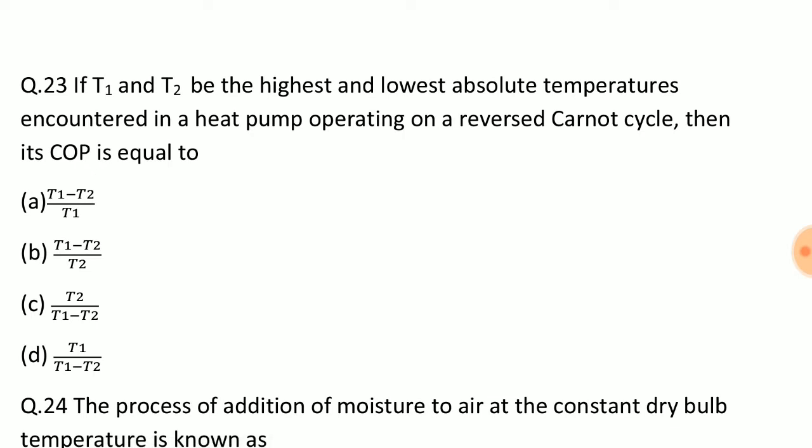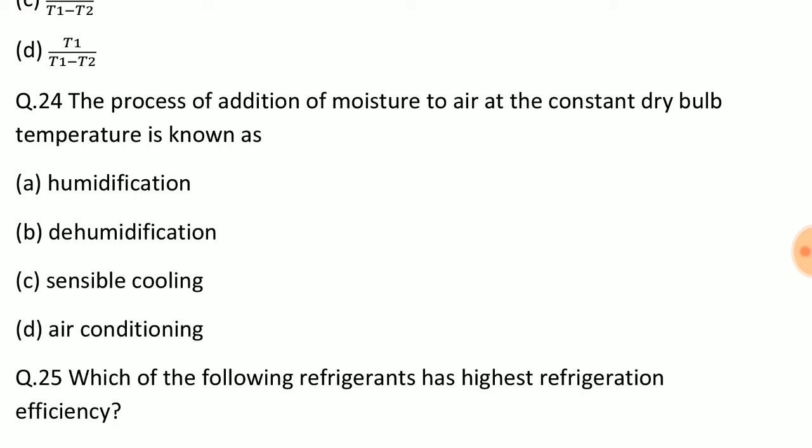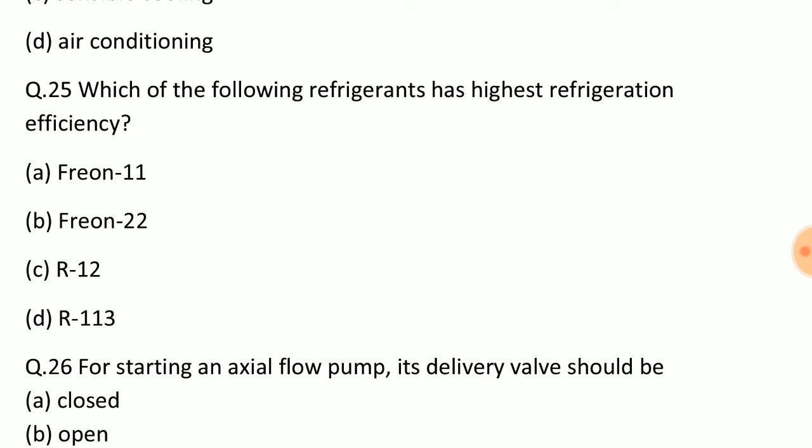Question: If T1 and T2 be the highest and lowest absolute temperatures encountered in a heat pump operating on a reverse Carnot cycle, then its COP is equal to? Answer: Option D, T1 upon T1 minus T2. Question: The process of addition of moisture to air at constant dry bulb temperature is known as? Answer: Option A, humidification. Question: Which of the following refrigerants has highest refrigerant efficiency? Answer: Option A, Freon 11.